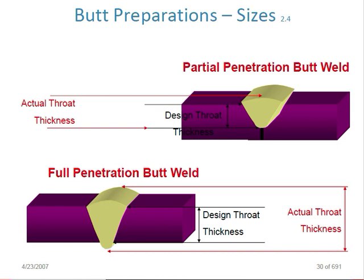This is the single bevel butt joint. You can see the root area which is not completely penetrated — this is partial penetration butt weld, where the penetration is not done fully. For partial penetration, the actual throat thickness is measured from the top of the toe to the root. Design throat thickness is only from the root to the plate surface. For full penetration butt weld, the actual throat thickness and the design throat thickness are the same from root to toe.